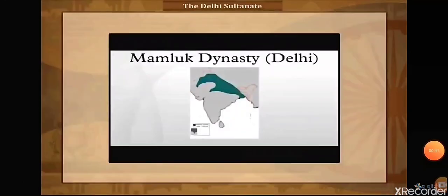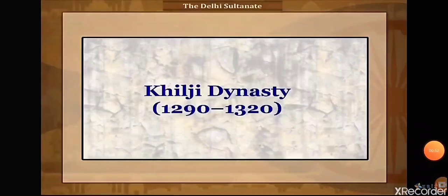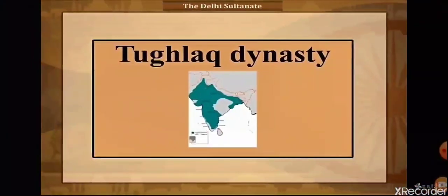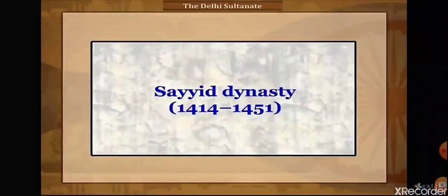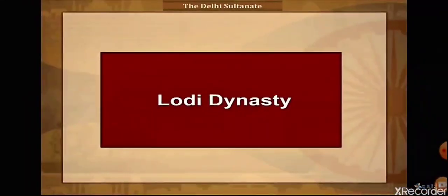The five dynasties were: first, the Mamluk dynasty, which ruled from 1206 to 1290; then the Khilji dynasty, 1290 to 1320; then the Tughlaq dynasty, 1320 to 1414; then the Sayyid dynasty, 1414 to 1451; and finally the Lodi dynasty, which ruled from 1451 to 1526.